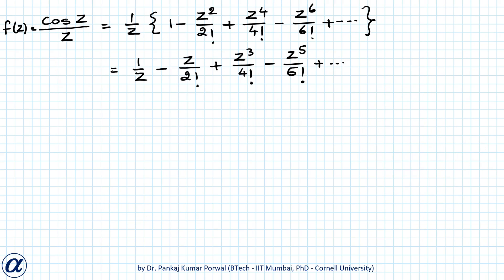Looking at another example, f(z) equals cos(z) upon z. The Laurent series expansion is 1 upon z minus z upon 2 factorial plus z cubed upon 4 factorial minus and so on. Here the highest negative power of z is minus 1, so it has a pole of order 1, that is a simple pole.